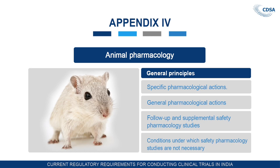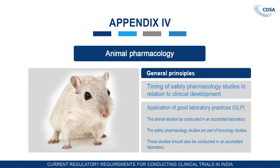Appendix 4 is animal pharmacology, which covers the safety of the drug. The general principles include specific pharmacological actions, general pharmacological actions, follow-up and supplemental safety pharmacology studies, conditions under which safety pharmacology studies are not necessary, and timing of safety pharmacology studies in relation to clinical development. Application of GLP is also addressed. Animal studies must be conducted in an accredited laboratory; where safety pharmacology studies are part of toxicology studies, they should also be conducted in an accredited lab.